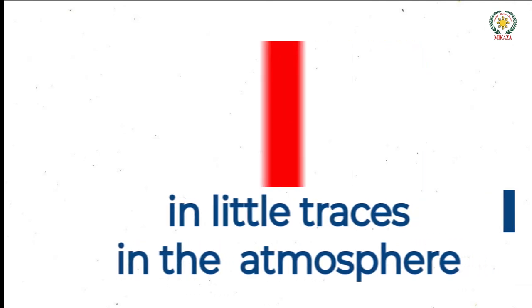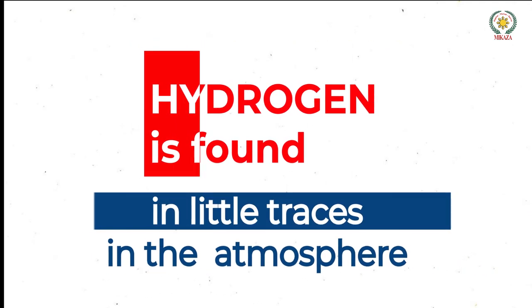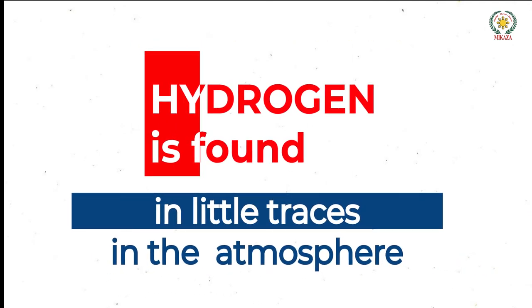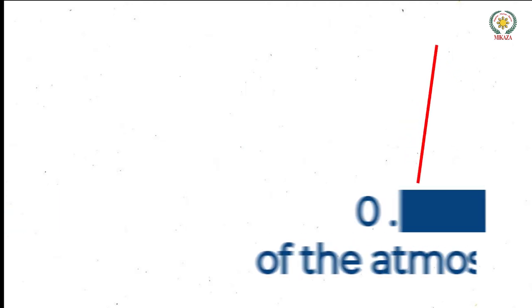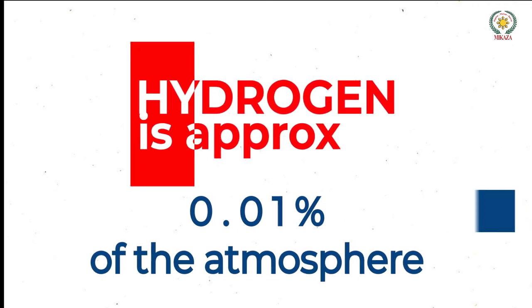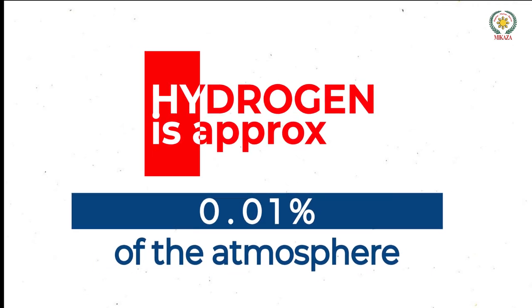In the atmosphere and in the earth's crust, hydrogen is found in little traces. It is not a much amount around us. So in the atmosphere, here I am talking about the earth's atmosphere, it is only 0.01 percent of the atmosphere which is made up of hydrogen.